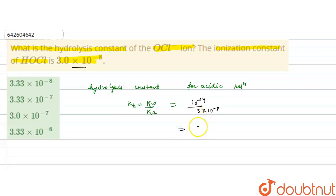So this will be equal to 1 by 3 into 10 raised to the power minus 6. When this 10 raised to the power minus 8, it will go in the numerator.